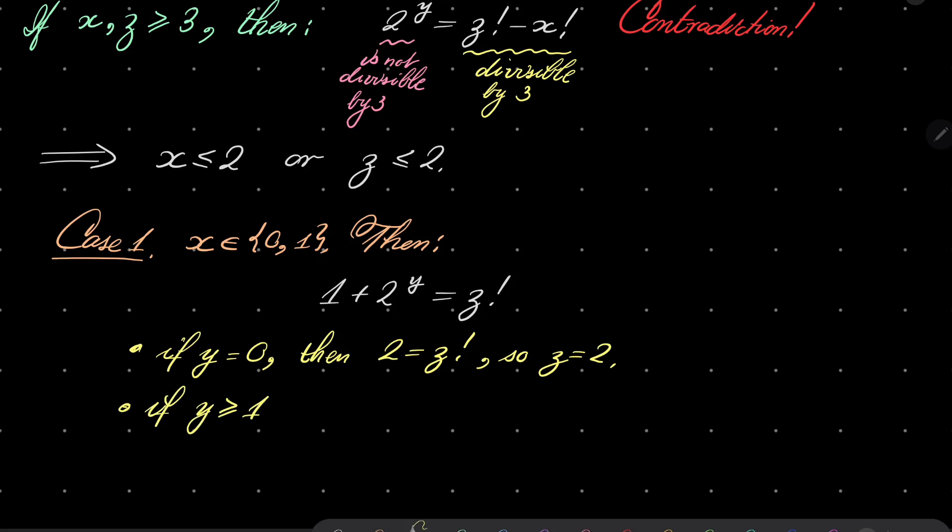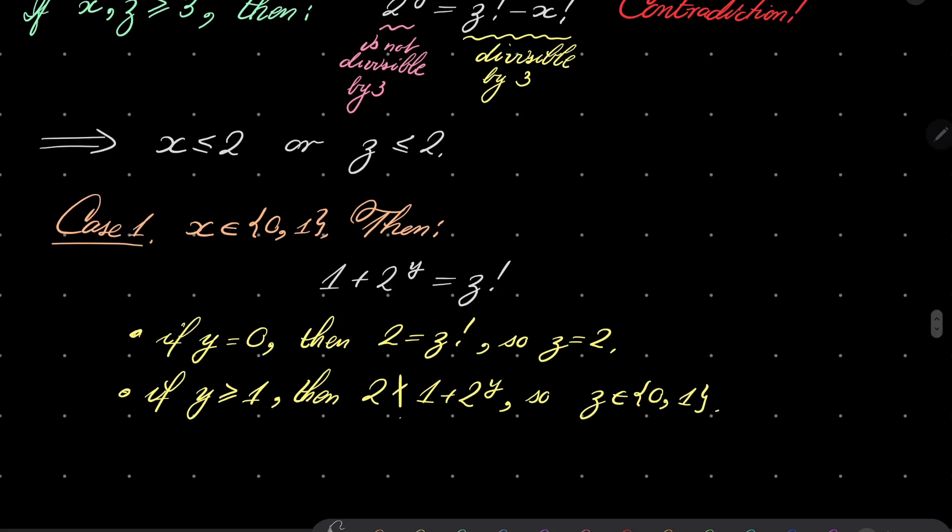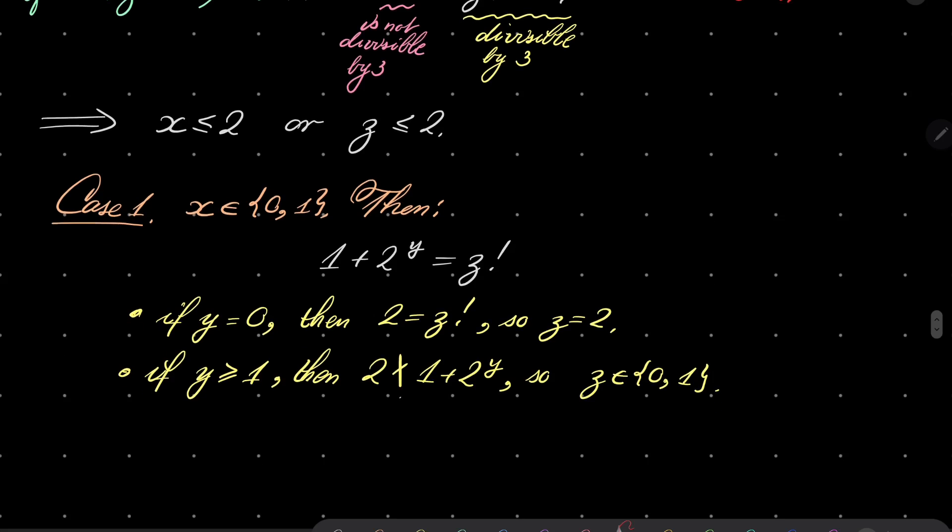However, if y is greater than or equal to 2, then notice that on the left hand side we have an odd number. So 2 does not divide 1 plus 2 to the power of y. So z must be 0 or 1. Again, why is that? Because already 2 factorial and any other higher factorial is even, and the left hand side is odd. So z is either 0 or 1, and we have, easy to see, we have no solutions there.